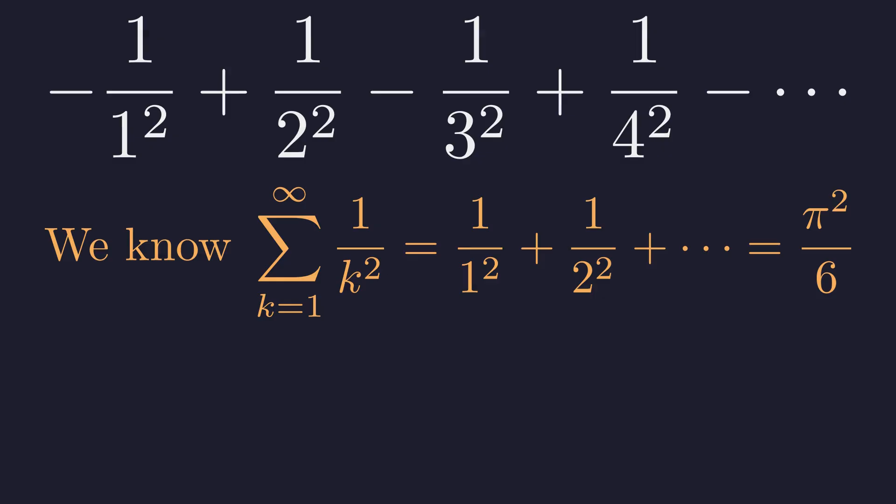Here's the twist. This is connected to the Basel problem, one of the most famous problems in mathematics, unsolved for almost a century until Euler cracked it in 1734. The sum of all reciprocal squares equals pi squared over 6. Our integral just revealed a hidden door to mathematical history.